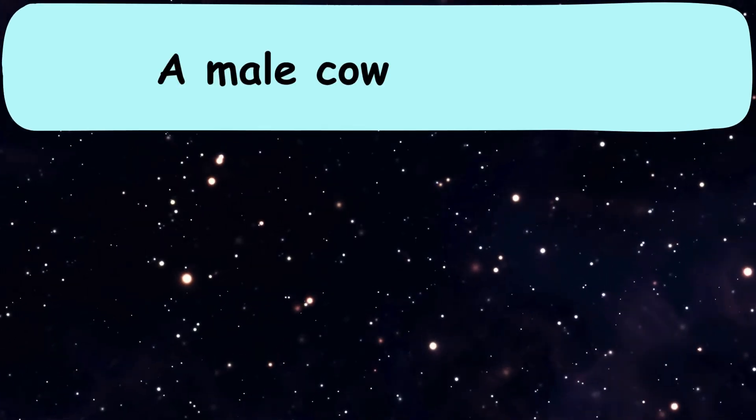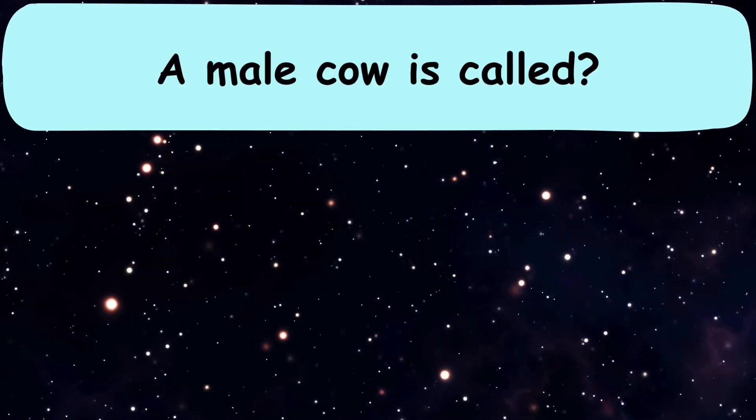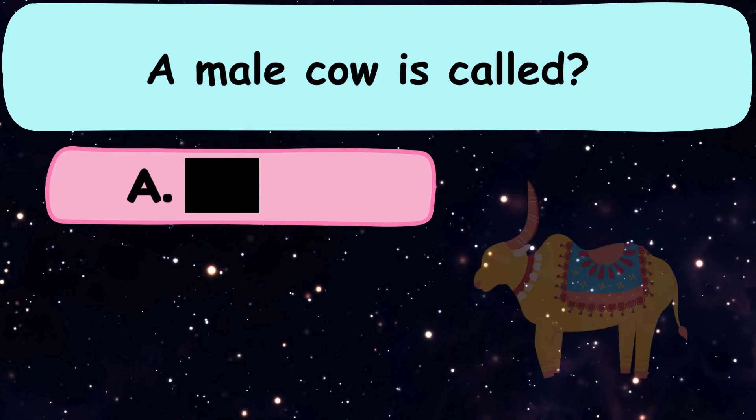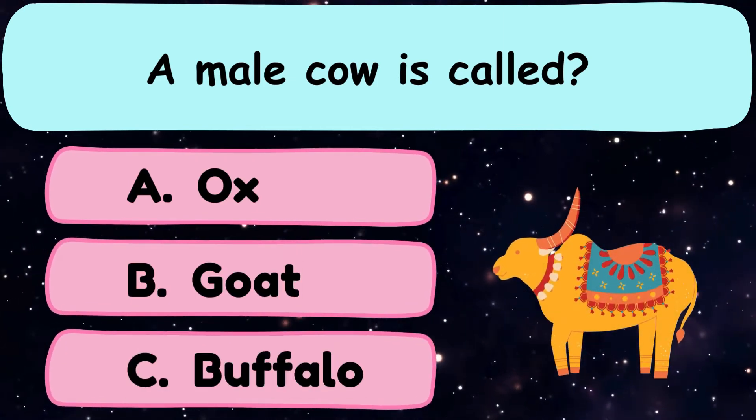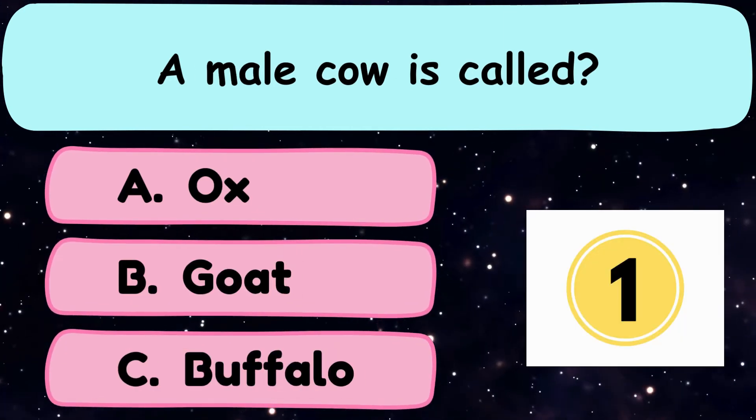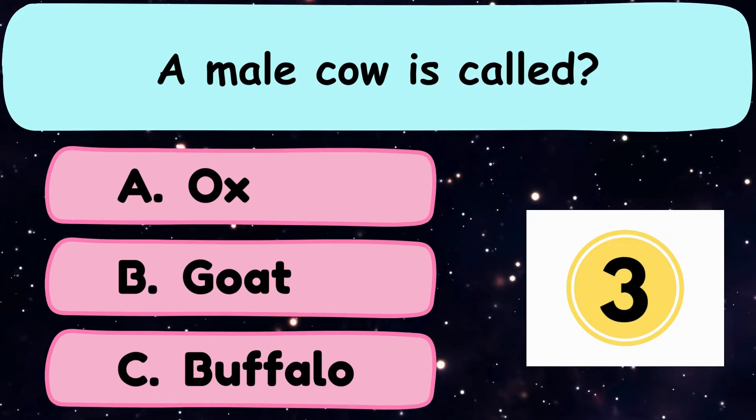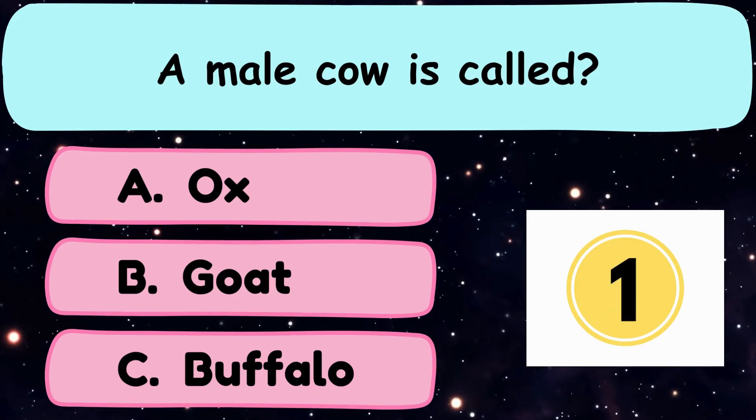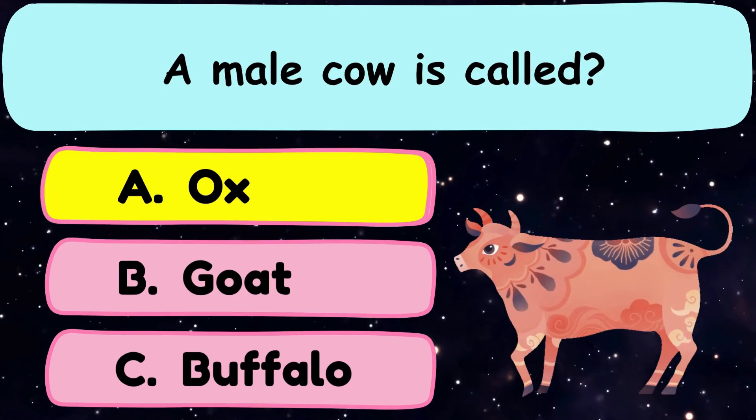Question number 26. A male cow is called A. Ox, B. Goat, or C. Buffalo? And the correct answer is option A. Ox.